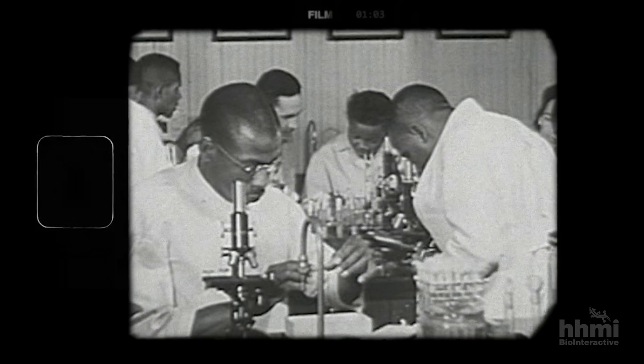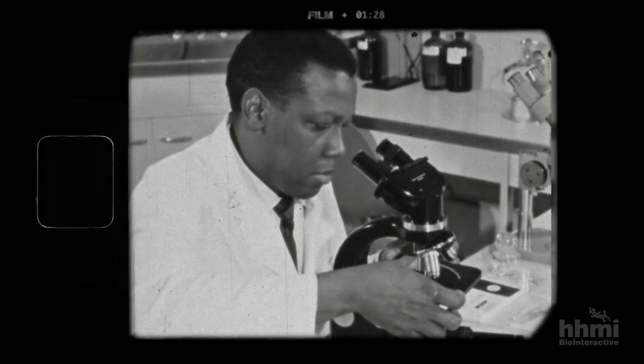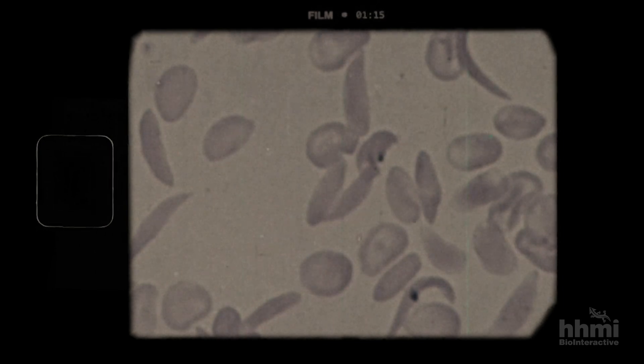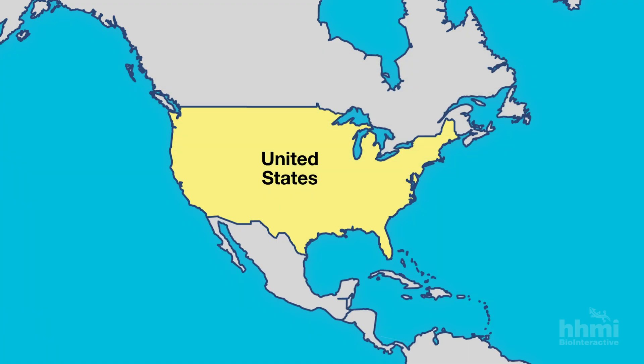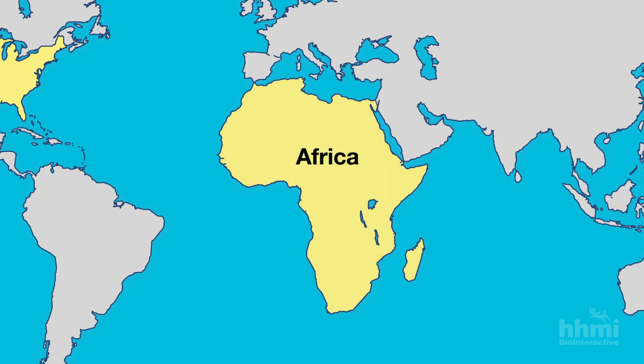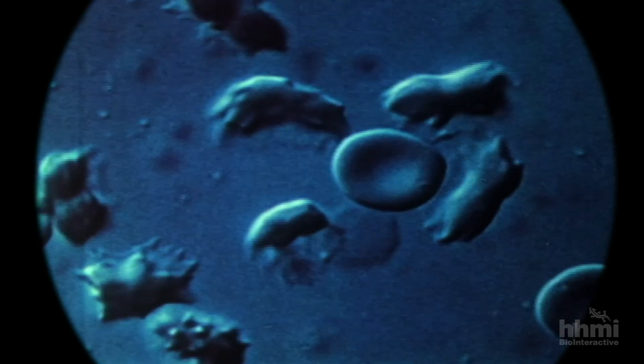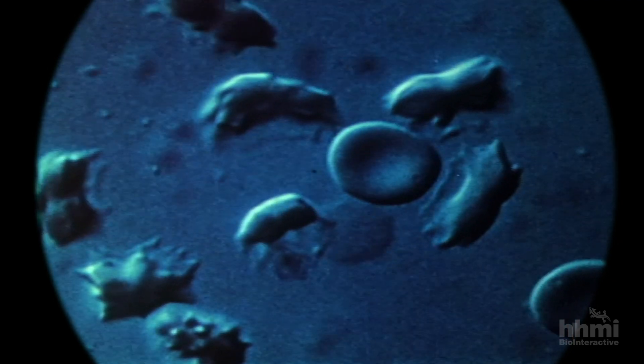American researchers first began to study sickle cell disease in the early 20th century. In the U.S., it was most common among individuals of African ancestry, so they assumed that it was a condition from Africa. But no one could explain why sickle cell would be more common in Africa.